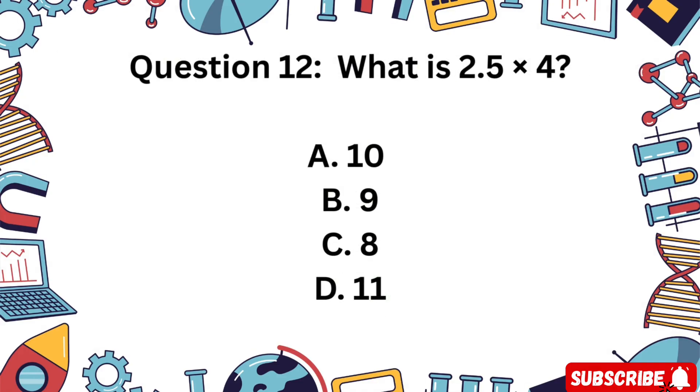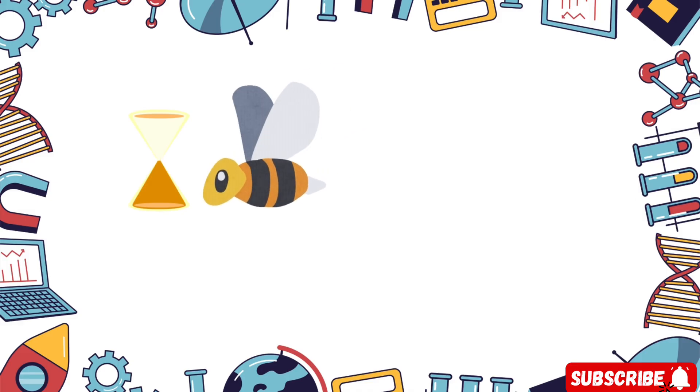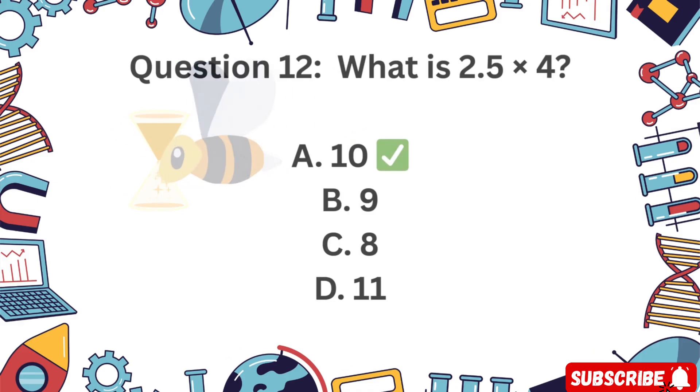Question 12: What is 2.5 times 4? Is it A 10, B 9, C 8, or D 11? You are correct. 2.5 times 4 equals 10.